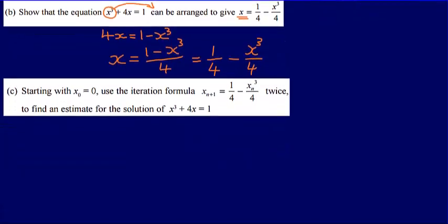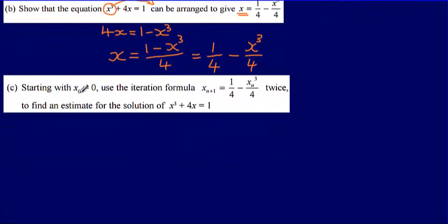For part C, starting with x₀ equals 0, we use the iteration formula xₙ₊₁ equals one quarter minus xₙ cubed over 4, applied twice, to find an estimate for the solution of x cubed plus 4x equals 1. The idea is straightforward: to find the next term, you simply substitute the previous term into the formula.